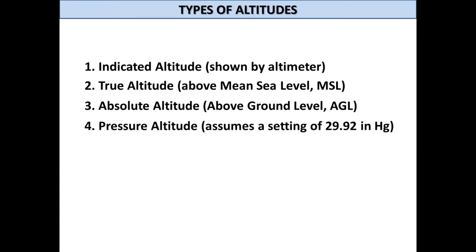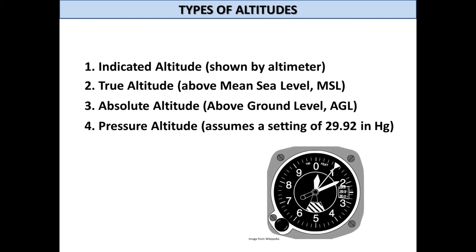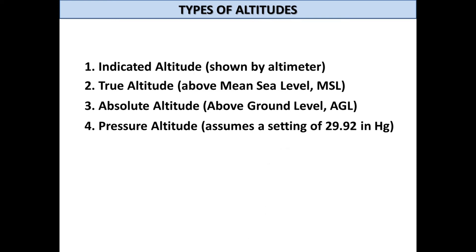Pressure altitude: from an engineering standpoint, it is the true altitude as predicted by a pressure instrument such as an altimeter, assuming the instrument is perfectly calibrated so that when it shows, say, 10,180 feet, this matches the true altitude above mean sea level precisely. From a pilot standpoint, pressure altitude is what the altimeter indicates when 29.92 inches mercury or 1013.25 millibars is used as the reference pressure.